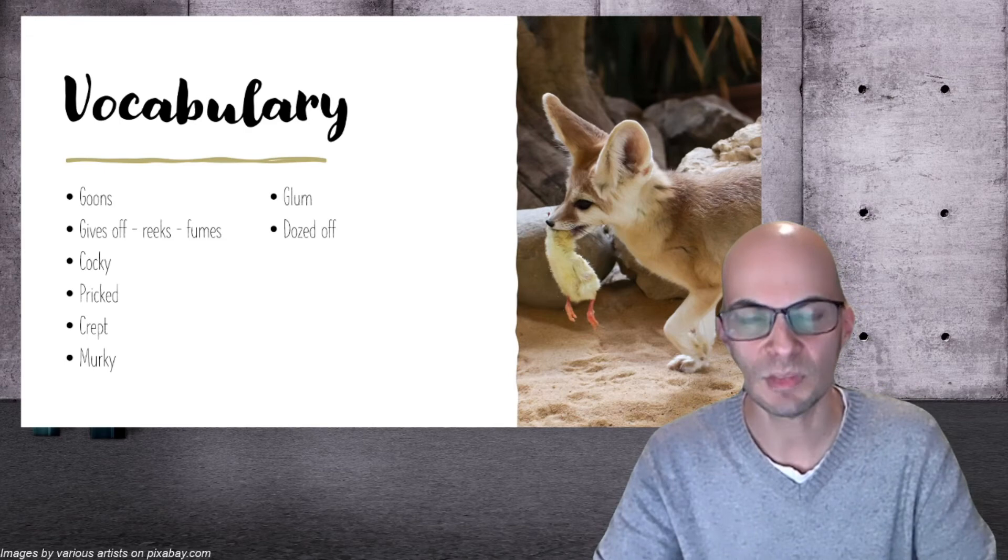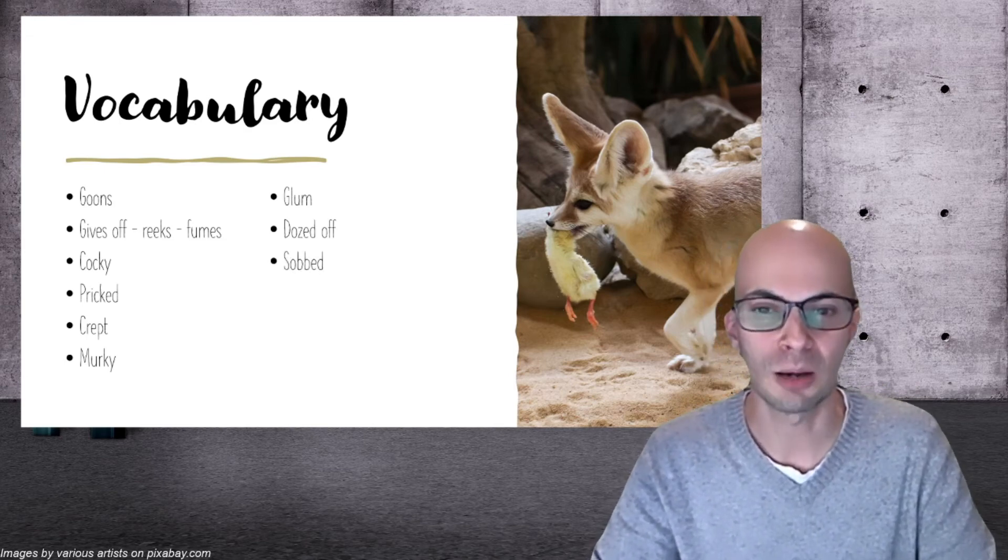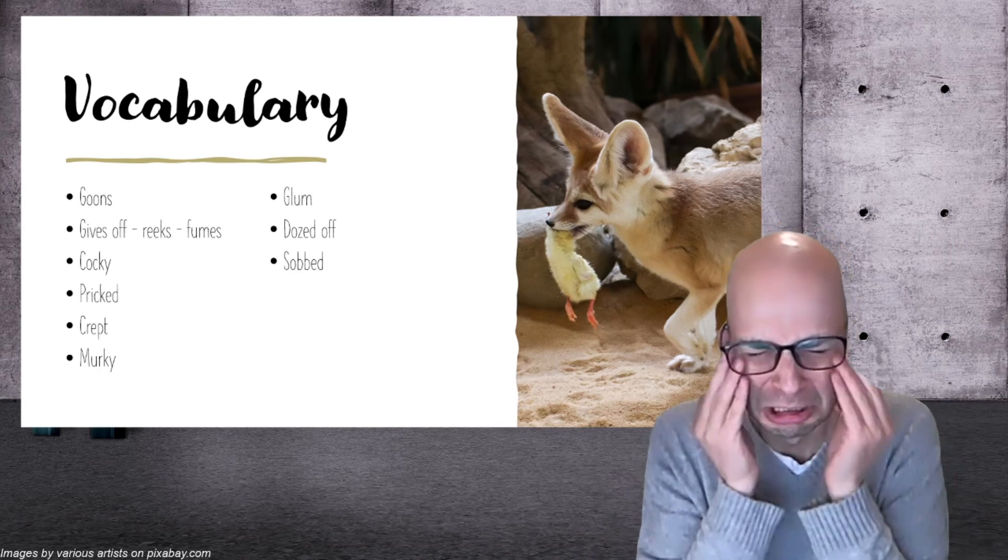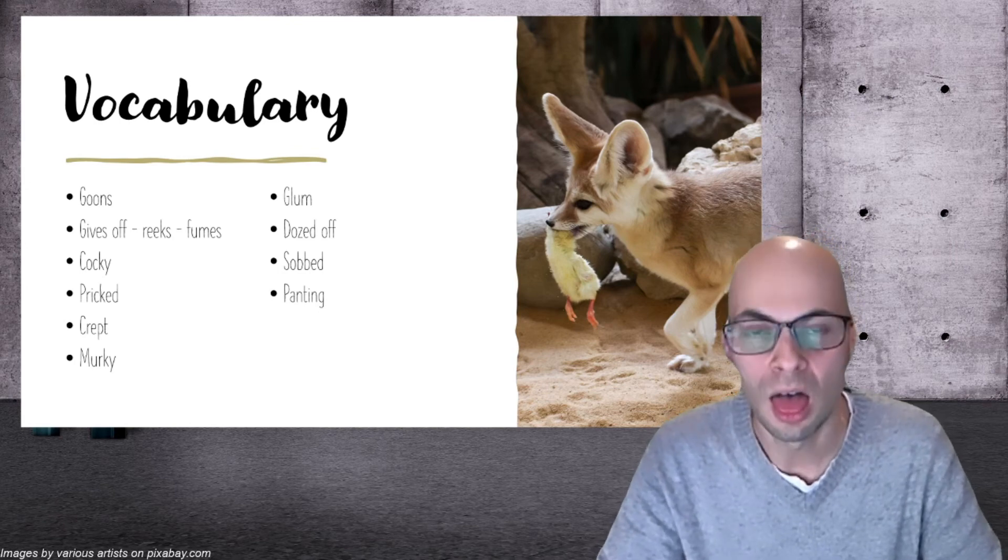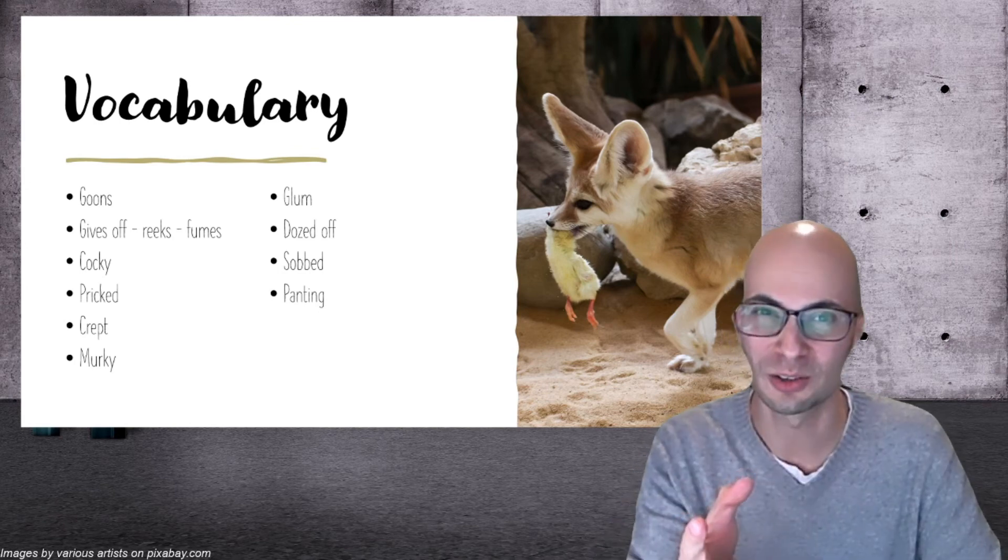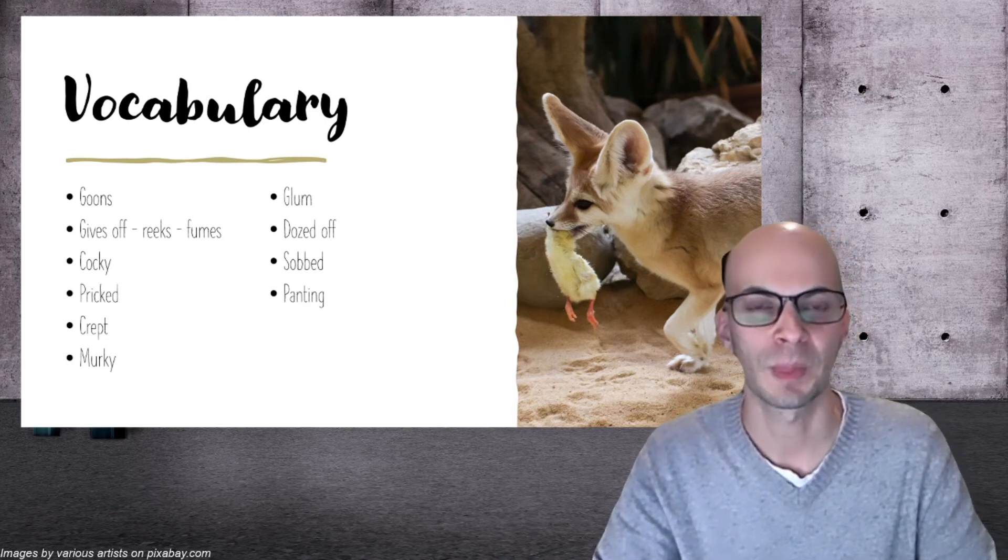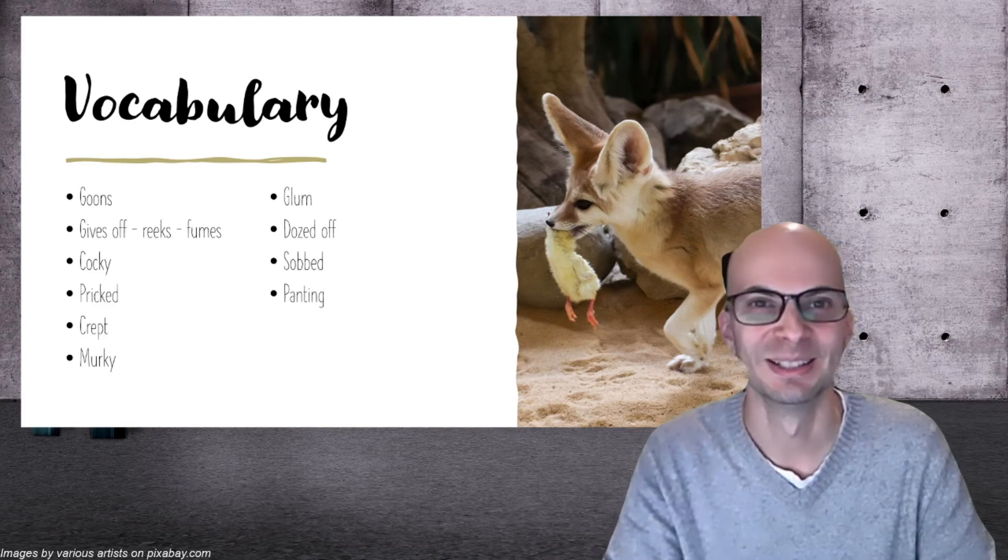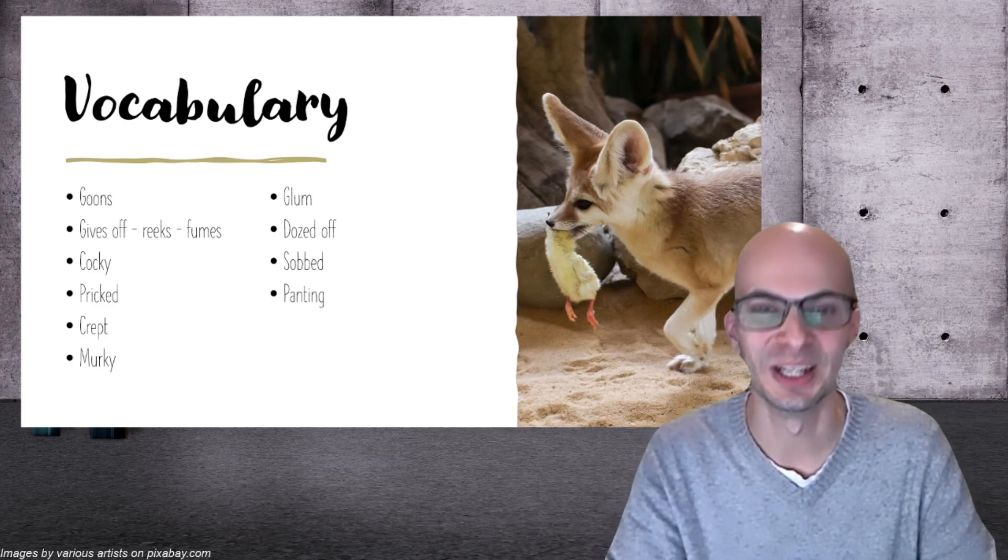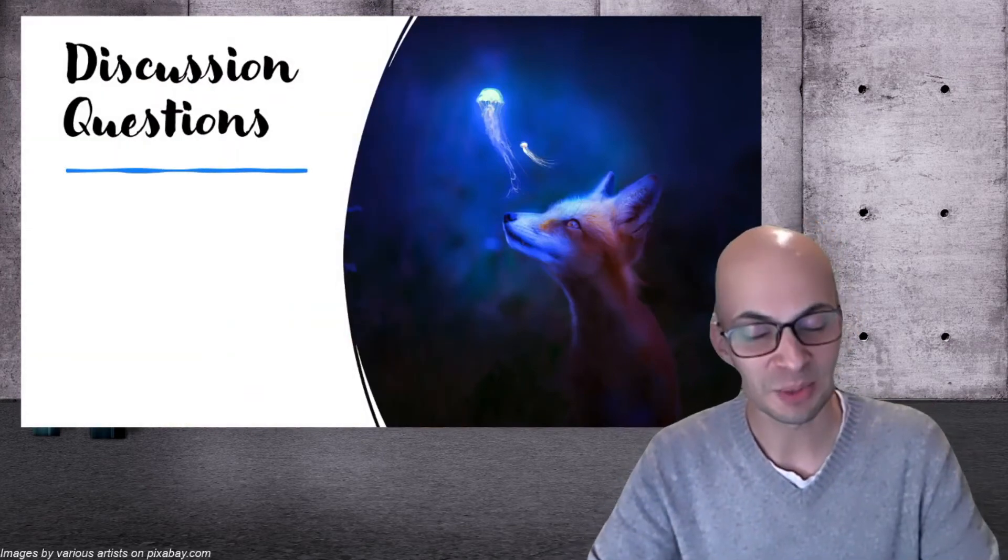Dozed off - fell asleep. Sobbed - cried. Panting, like a dog, having your breath go in and out quickly from your mouth, probably your tongue is sticking out too to cool off your body. That was the last vocabulary word. If there's more, you can ask them when we meet.